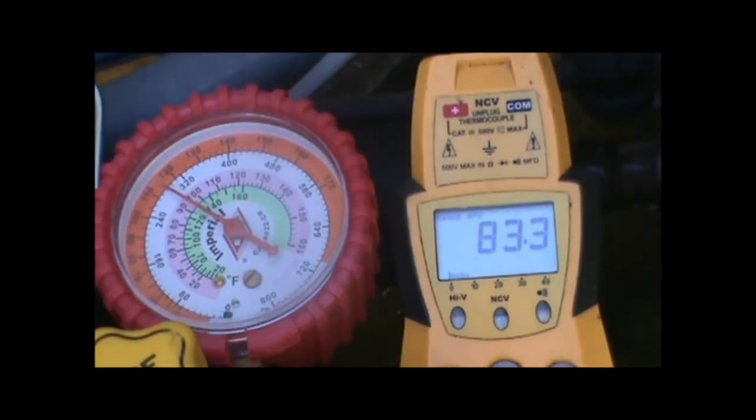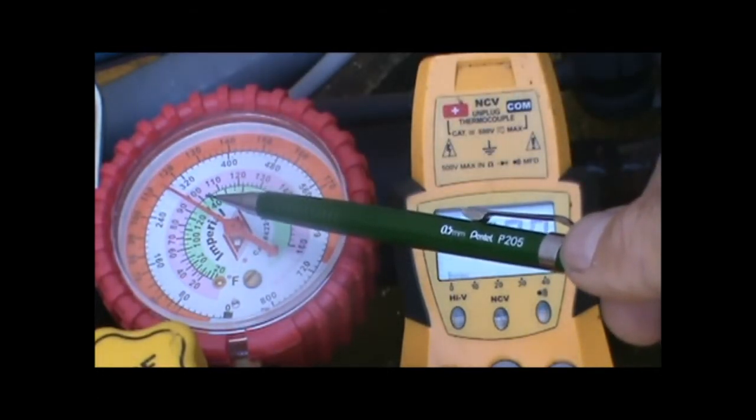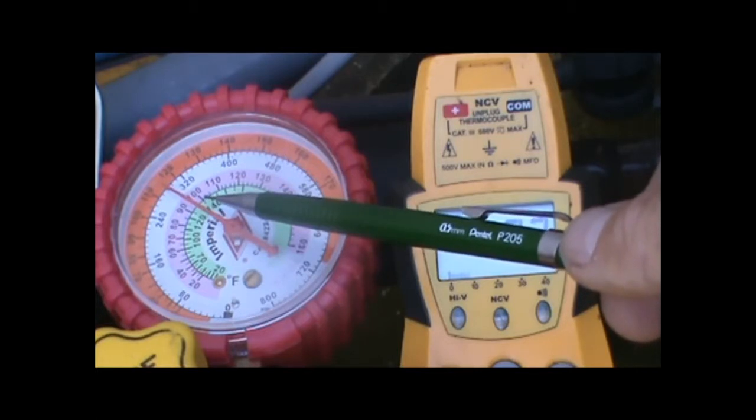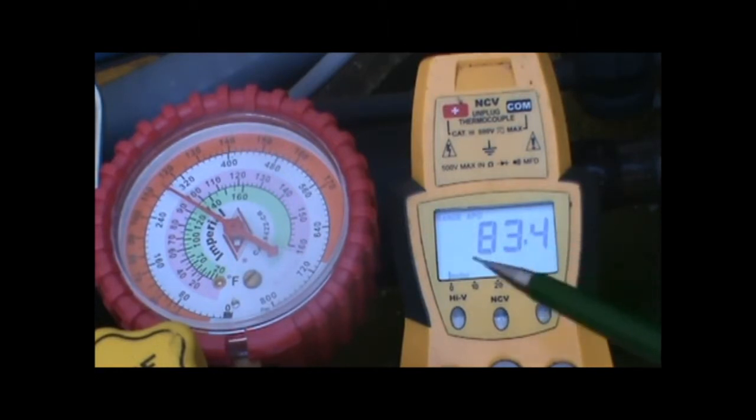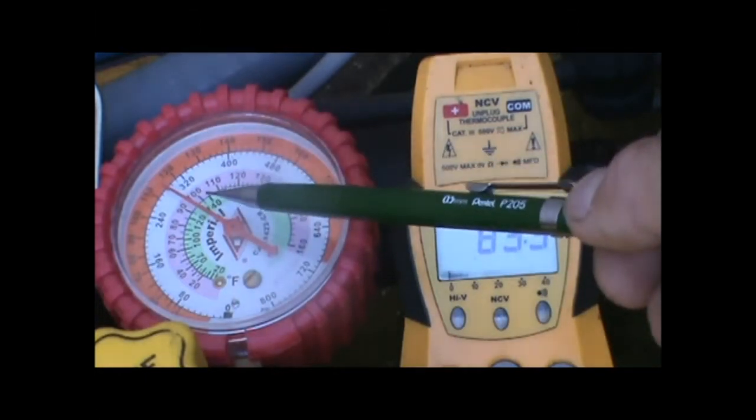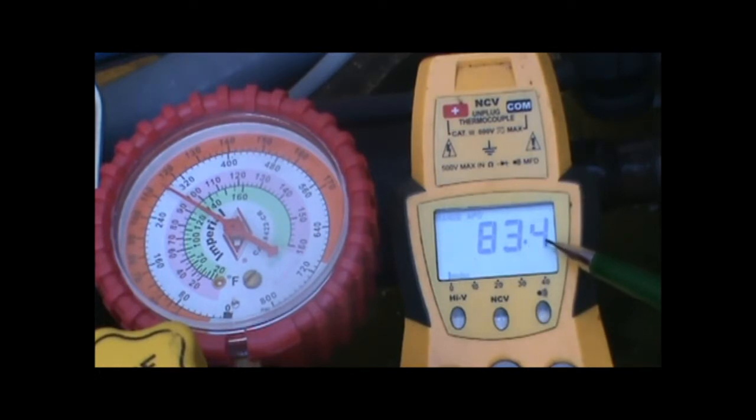The way we measure sub-cooling is taking the saturation temperature as indicated by our gauge, which was 92, 93 degrees. From that, we subtract the temperature of the refrigeration pipe, the high side line. So that's 93 degrees minus 83 degrees, which gives us 10 degrees of sub-cooling.